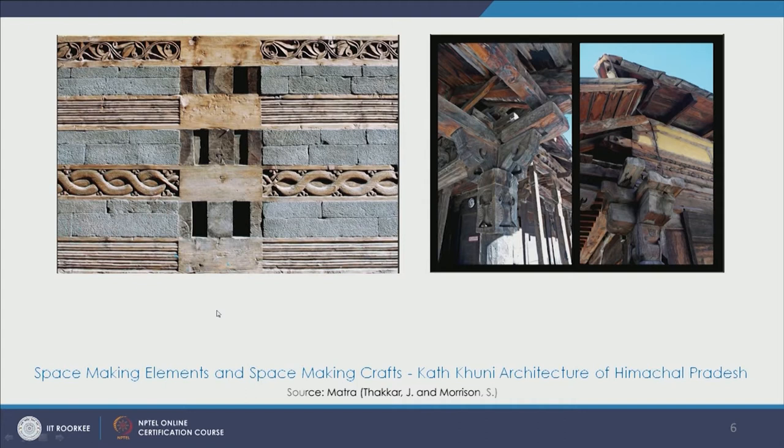When there are lateral forces in case of an earthquake, this kind of construction with alternate bands prevents the entire building from shaking and falling apart. This comes from natural resources and the know-how of the people, in the form of climate responsiveness in the region where these structures are situated. These are very interesting examples which we can take from our traditional practices and incorporate even in contemporary times, with necessary modifications resulting from changes and needs that are evolving with time.